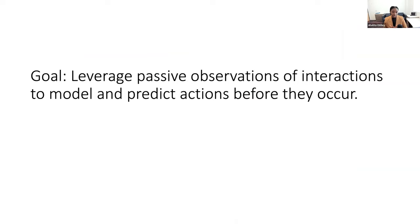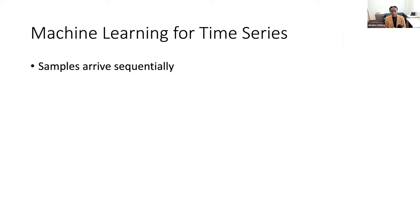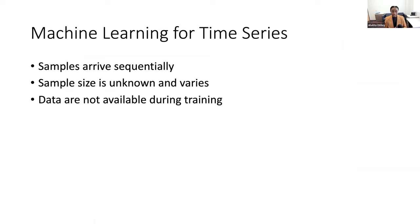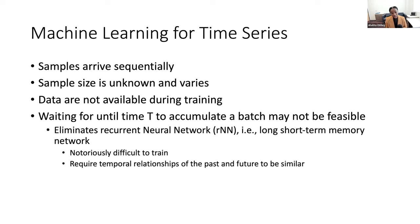The goal is to look at passive observations and predict actions before they occur. This is fundamentally machine learning for time series, but we assume samples arrive sequentially and the sample size is unknown — I have no idea how many points someone would click on. We also have no training data, since we want to deploy these algorithms online and can't assume learning from one user translates to another. We want algorithms that can begin with a prior belief so they can learn quickly and support a user, even with a small sample size.